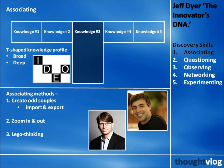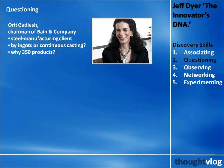We've just considered the first discovery skill, associating, which is about bringing all the new ideas together. But where do you get those new ideas from? One of the ways is questioning. For example, Orit Gadish, chairman of Bain & Company, was helping a steel manufacturing client.